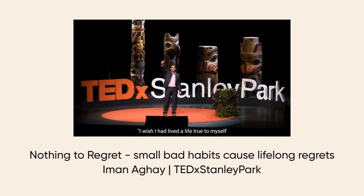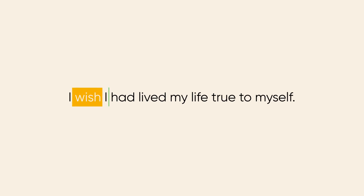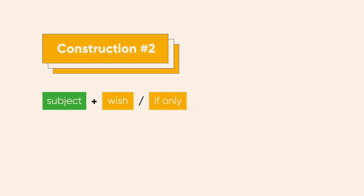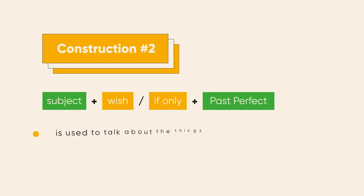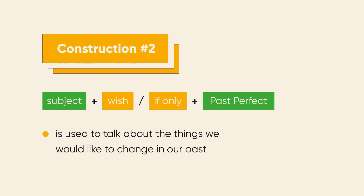There's a great speech called Nothing to Regret, which has some great points about what people really regret doing when they are at their last moments of life. I wish I had lived a life true to myself, not a life that others expected of me. This regret is definitely about the past, and here the speaker uses the construction subject plus wish or if only plus past perfect, which we use to talk about something that we would like to change about our past. Remember: subject plus wish or if only are followed by past perfect.